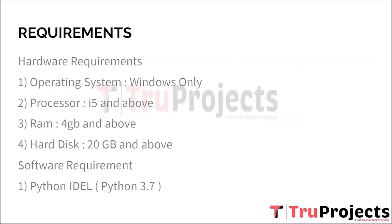Coming to the requirements part, there are two types of requirements: hardware requirements and software requirements. For hardware requirements, the processor required is i5 and above, a minimum of 4GB of RAM is required, and a hard disk of 20GB is required. Coming to the software requirement part, Python IDLE version 3.7 is required.